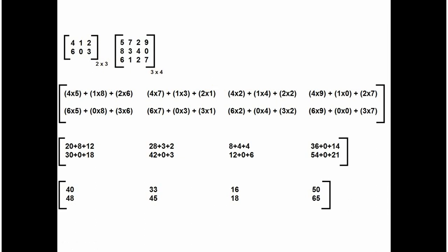Matrix Multiplication basically requires the concept of nesting of loops. Suppose this is the first matrix of order 2 by 3 — that means 2 rows and 3 columns. This is another matrix of order 3 by 4 — that means 3 rows and 4 columns. For matrix multiplication, there is a prerequisite condition that the column of the first matrix should be equal to the row of the second matrix. If they do not match, matrix multiplication is not possible.